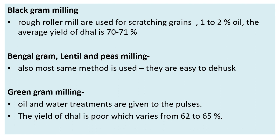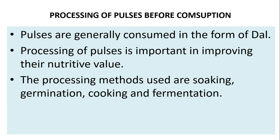Bengal gram, lentil, and pea milling use a similar method as they are easy to dehusk. For green gram milling, oil and water treatments are given to the pulses; the yield of dal is poor, varying from 62 to 65 percent.